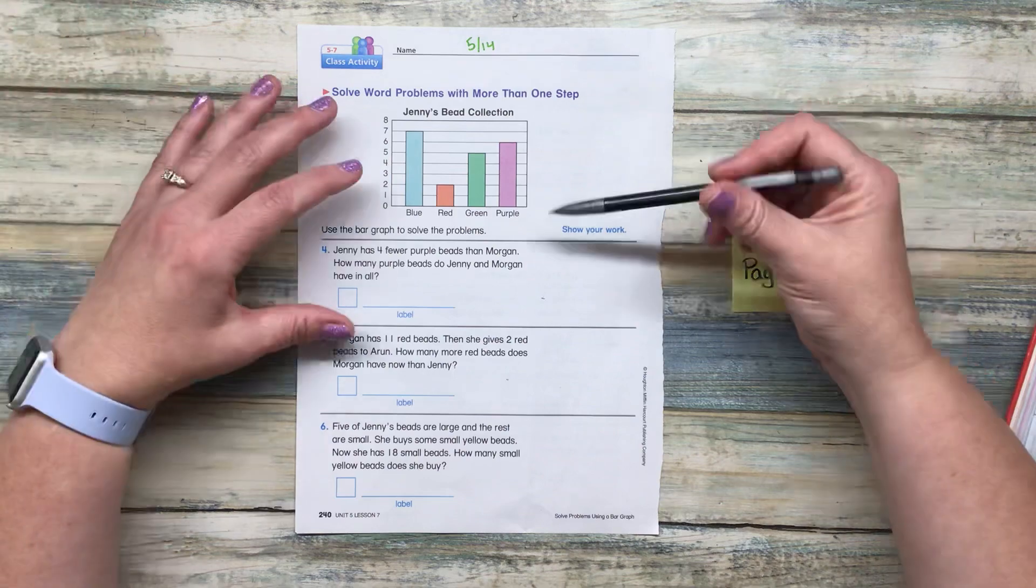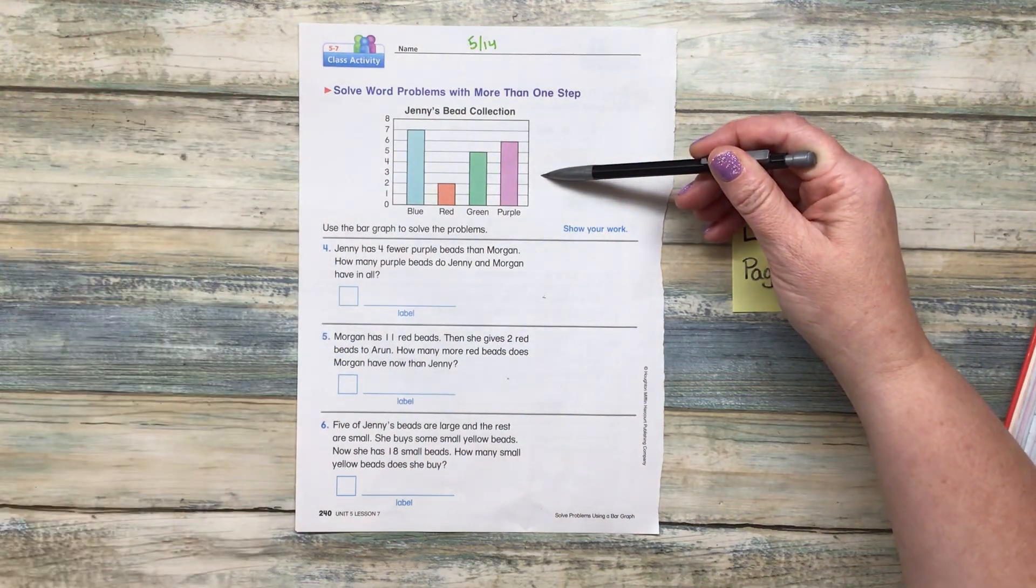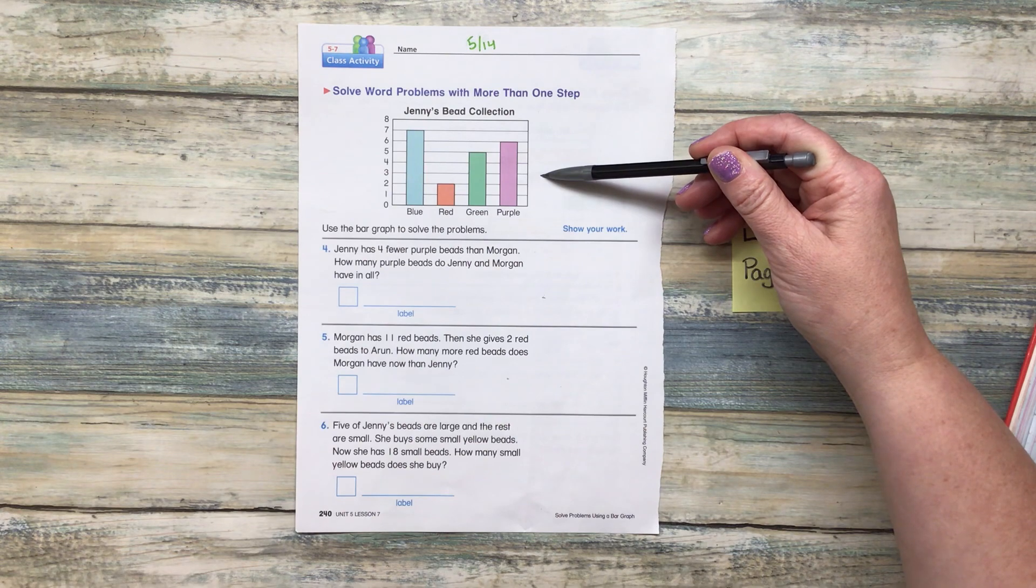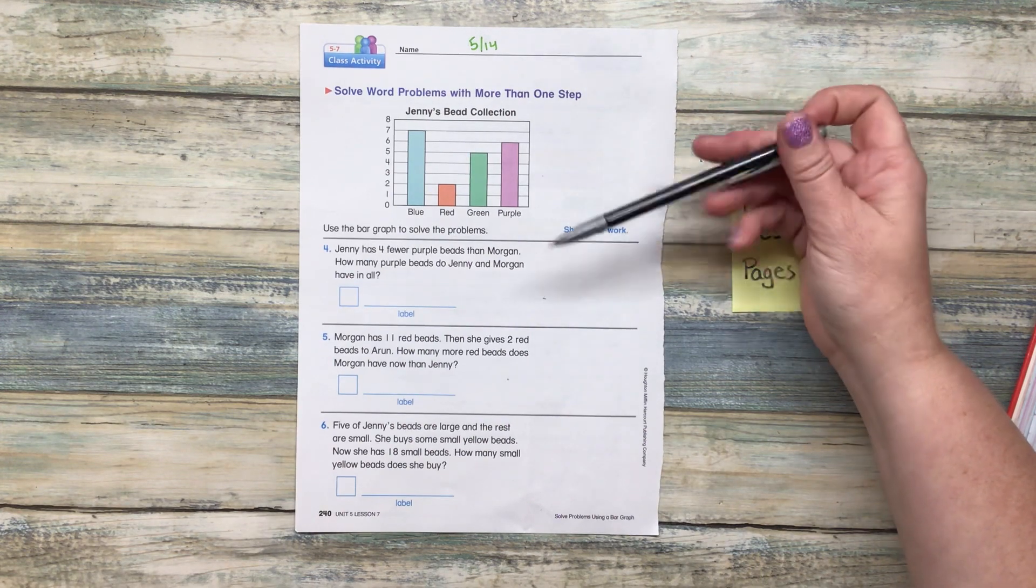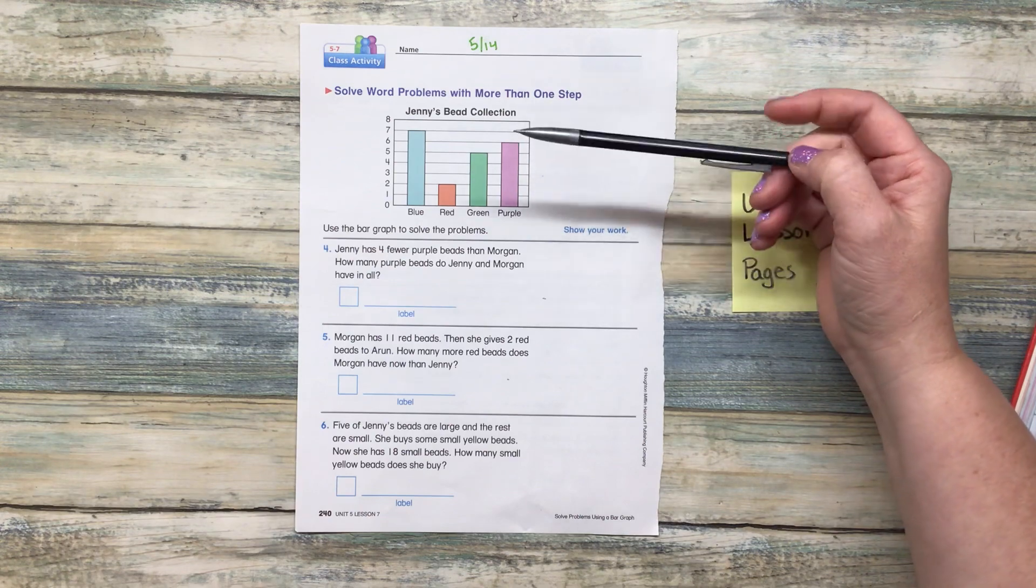All right. Now here we are looking at what kind of graph is this? Is it a vertical or horizontal graph? Go ahead and unmute yourself and just say it. That's right. Those up and down ones are vertical.